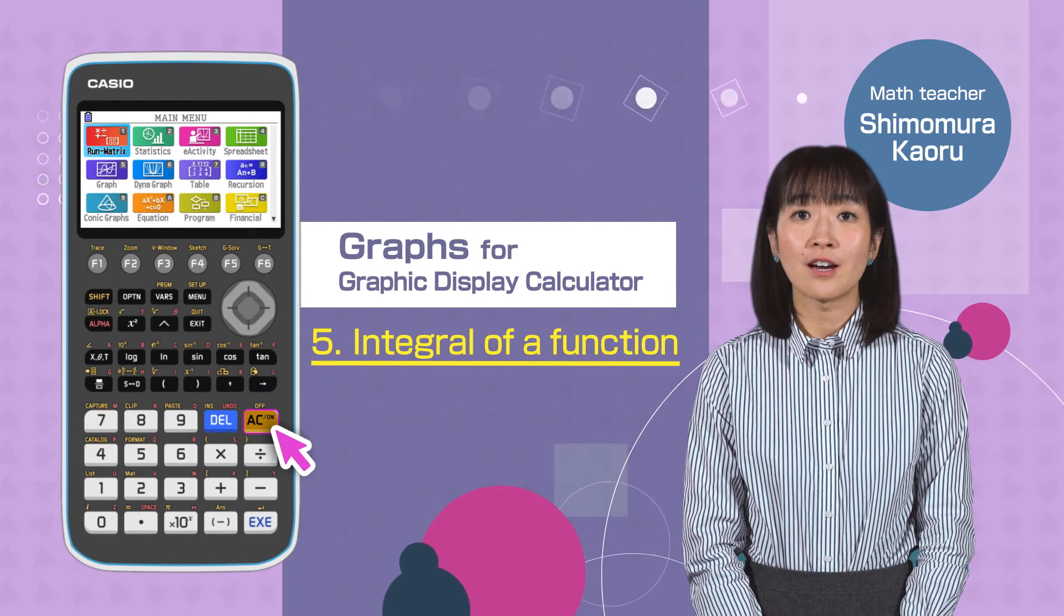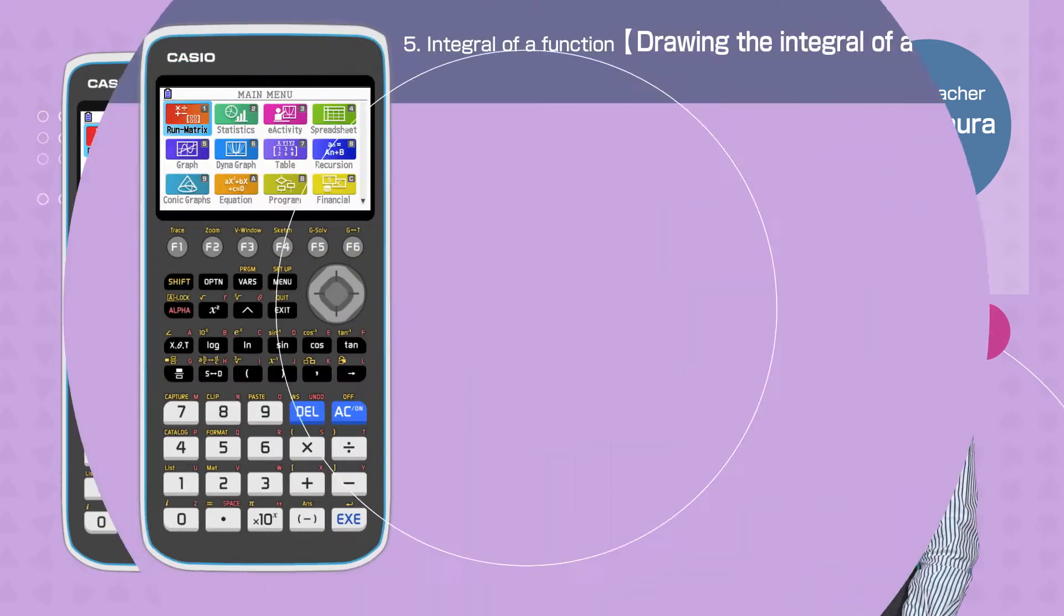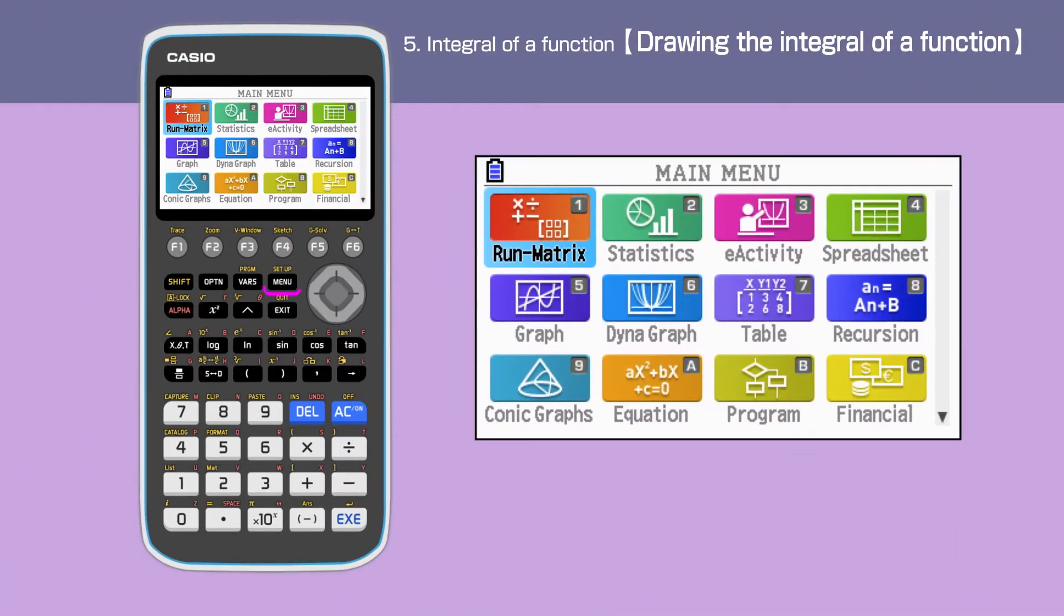Switch on your calculator by pressing the AC button. Press the menu button to open the main menu. Then move the cursor or press 5 to select the graph menu.